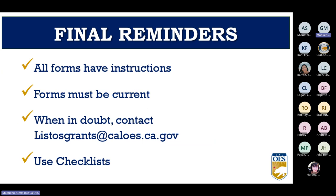Some final things to remember: all forms have instructions — read them before asking for help. Use forms from the website as those will be the most current versions. The checklist that comes with the RFP will tell you which forms are required. Email listosgrants@caloes.ca.gov if you have any questions. Use the checklist in Part Five of the Request for Proposal.